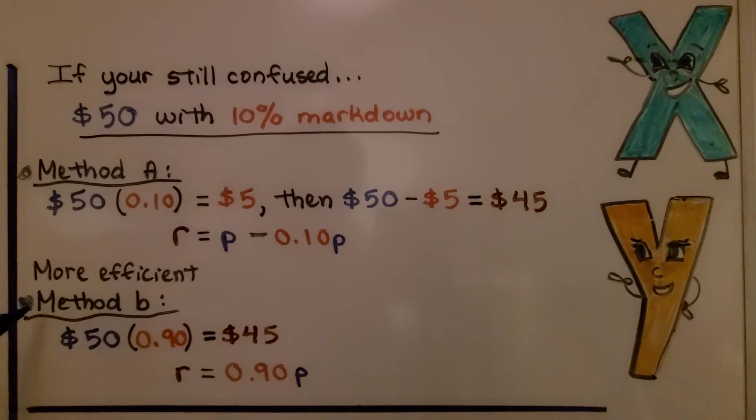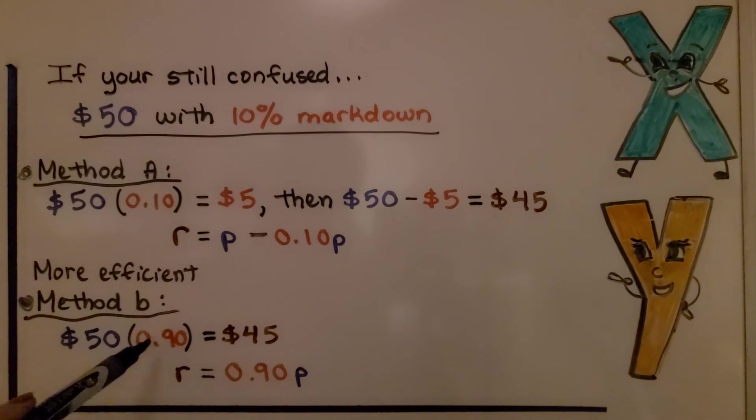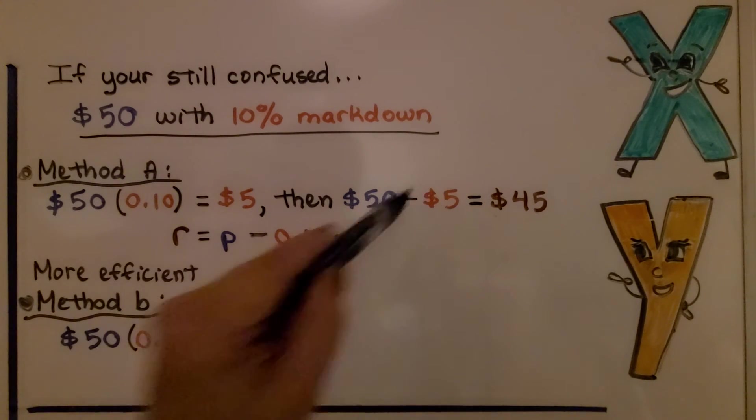For method B, if it's a 10% markdown, we just find what 90% is of $50. And we multiply the $50 times 90%. And we have our $45 right away without having to do this subtraction.